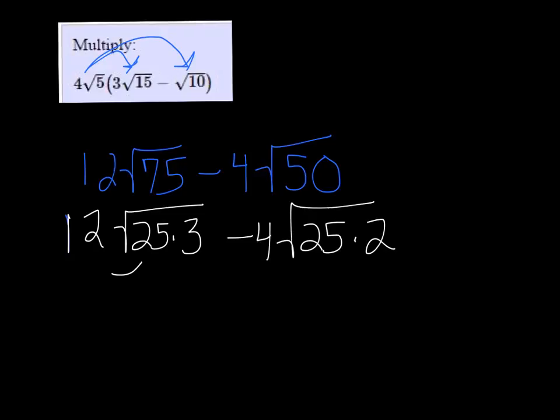So the square root of 25 is 5, that's going to come out multiplied by the number that's already out there, so we get 60 root 3 minus 20 root 2.